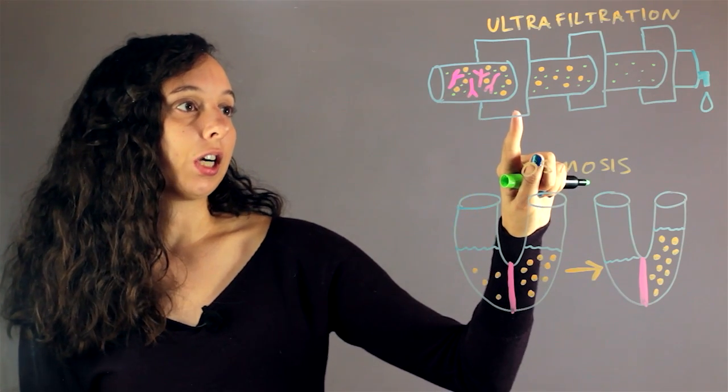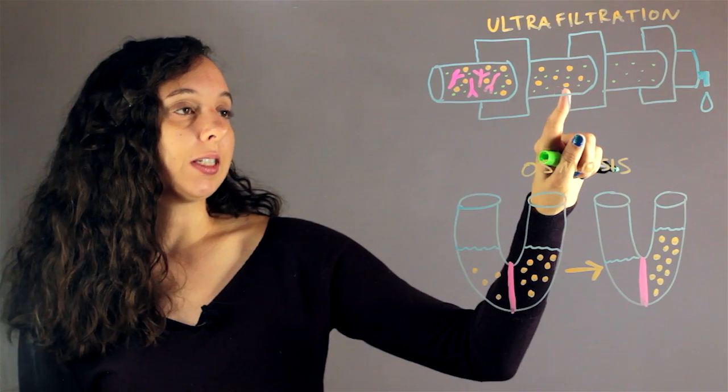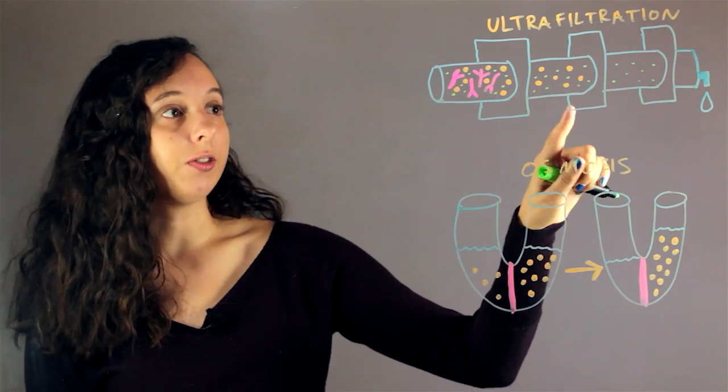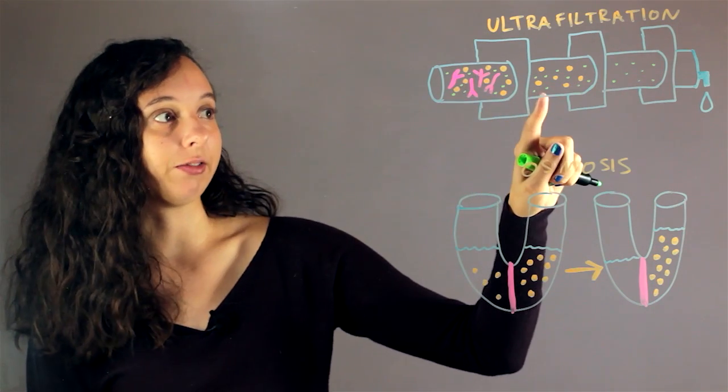And so once you push it through this first filter, a certain size of particulates will have to be left in the filter. So in this case, all of our twigs, our really huge things got left out.